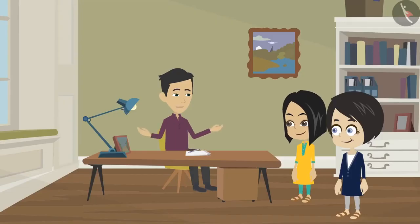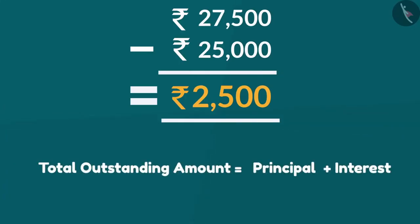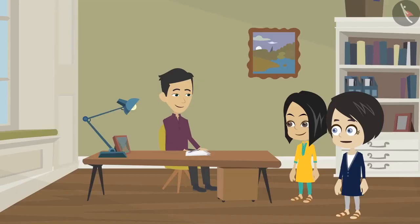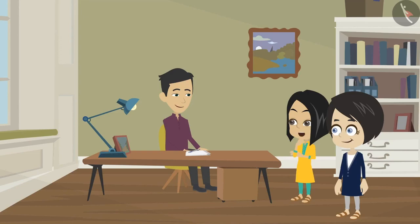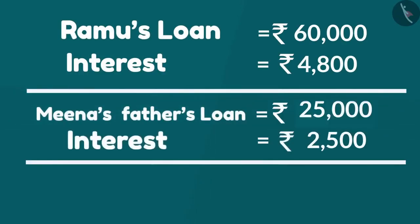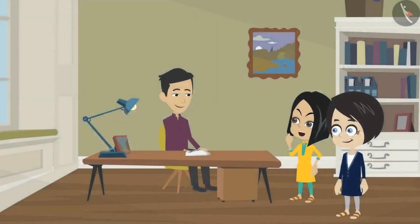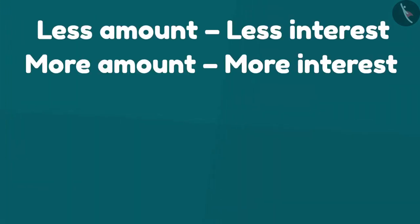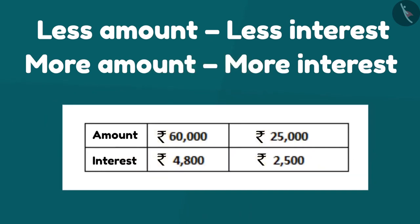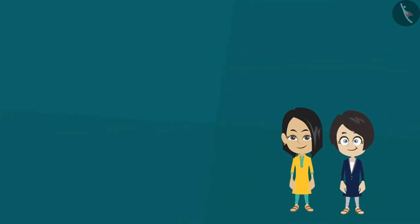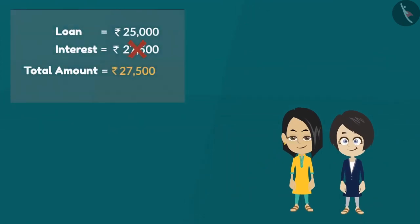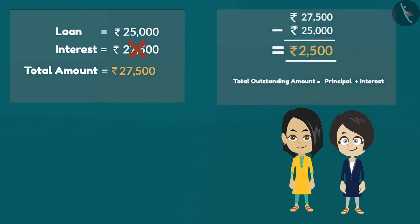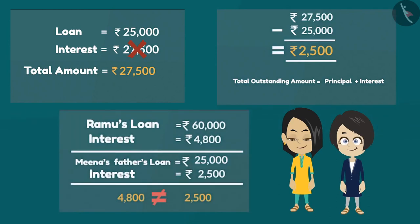The total outstanding amount is principal plus interest. Bubbly's dad's interest on loan is 4,800 rupees and Meena's dad's interest is 2,500 rupees. Why do we pay more interest? Because interest depends on the amount of loan taken — lower interest for a lesser amount, higher interest for more. Along with Bubbly and Meena, today we learned how to find the total outstanding amount by adding principal and interest, and that interest changes according to the loan amount.